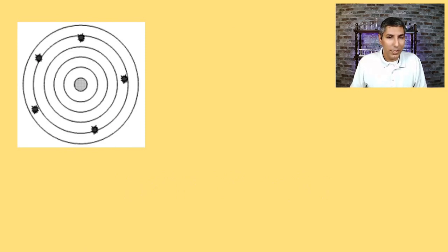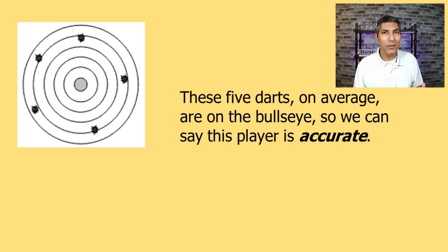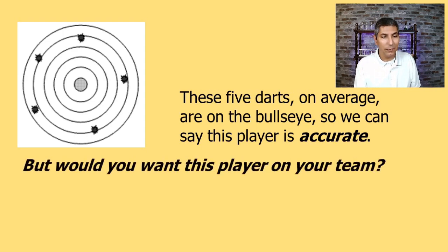Now how about this? This is a case that sometimes happens, not very often but sometimes. Notice that these results are not precise, they're all over the dartboard. However, if we take those five results and we average them out they actually do average to be the bullseye. So here's a special case. We can say this player actually is accurate but would you want that player on your team? No, they're not really scoring too many points.